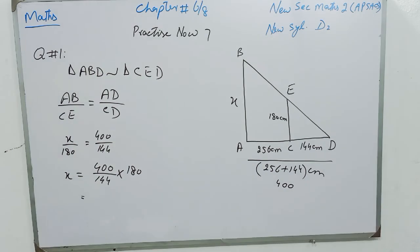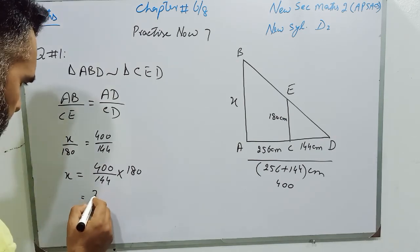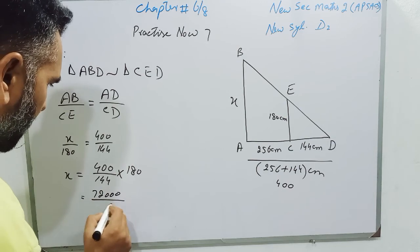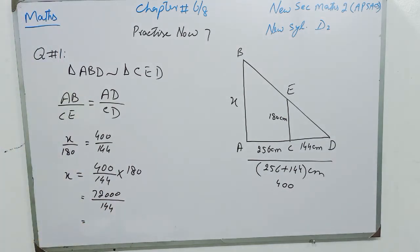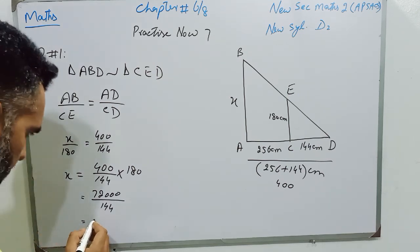When we multiply 400 and 180, we get 72,000 divided by 144. When we divide 72,000 by 144, we will have 500 cm.